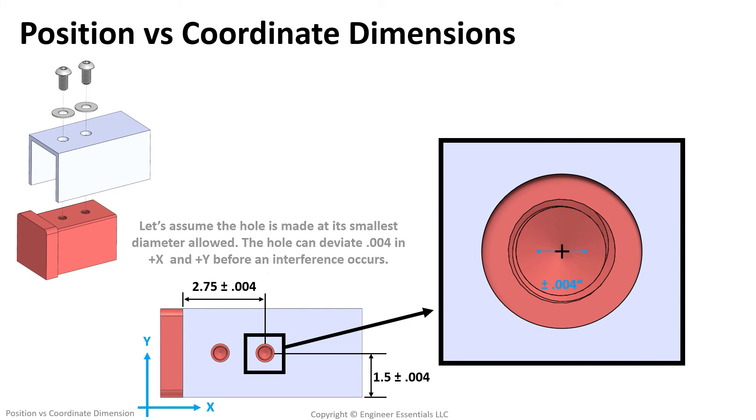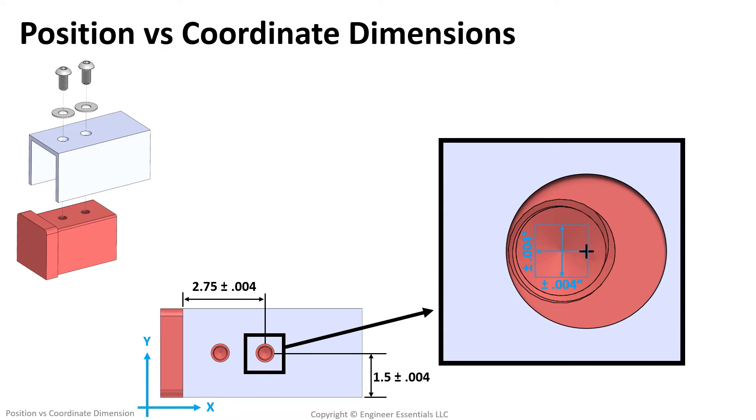And the same maximum deviation can be found in Y. This creates a rectangular tolerance zone that the axis of the hole must remain within. However, what's wrong with this way of tolerancing?